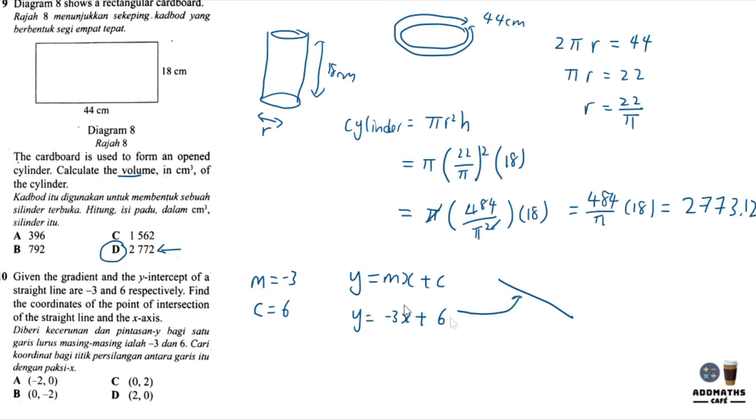If it intersects the x-axis, it means x-intercept. X-intercept means y equals 0. Let's put y equals 0 and find x. Negative 3x equals -6, bring negative to the other side, it becomes positive. 3x equals 6, so x equals 6 divided by 3, which is 2. So the coordinate is x = 2, y = 0. The answer is D.